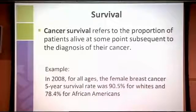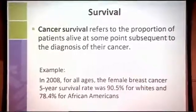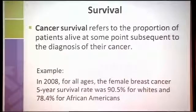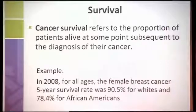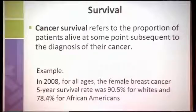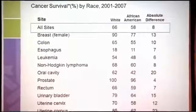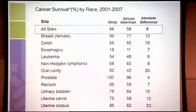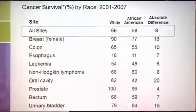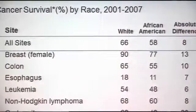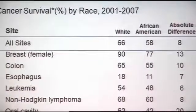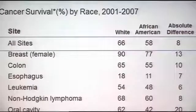Let me introduce the term survival, which refers to the proportion of patients alive at some point after the diagnosis of cancer. For example, in 2008, for breast cancer, the five-year survival was 90.5% for whites and 78% for African-Americans — meaning of 100 women diagnosed and treated in 2008, after five years, 90 of them would be alive, or 78 if they were African-American. There are disparities in cancer survival among Americans: the five-year relative survival rate for all cancers is 66% for the white population and 58% for the African-American population.